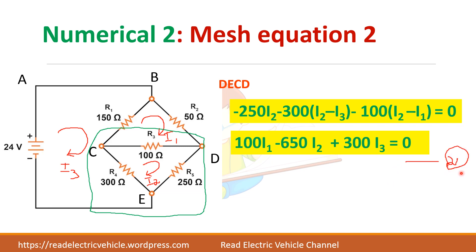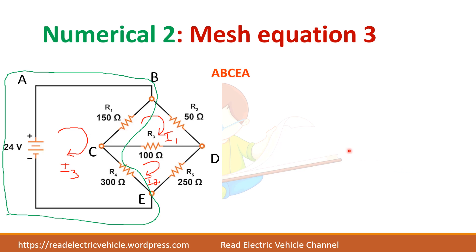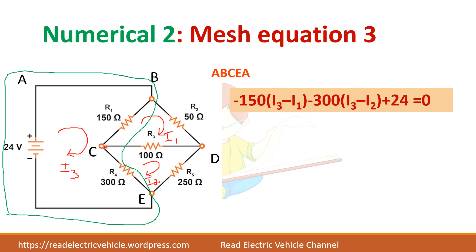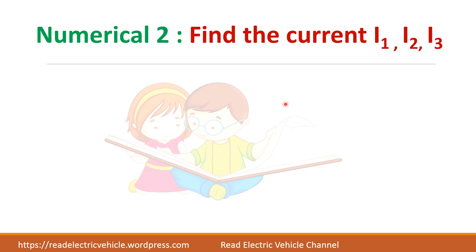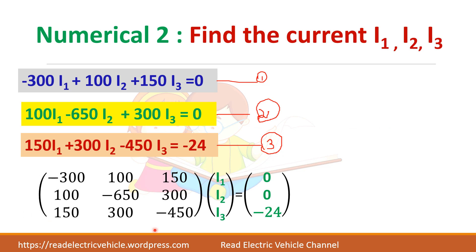Simplify the second equation. For the third equation, start from here: minus 150·(I3 minus I1), minus 300·(I3 minus I2), plus 24 (voltage source, current flows from negative to positive). Simplify to get the three equations and write the matrix. You can keep the equations as-is or multiply by minus 1 so the diagonal elements become positive — both give the same answer.